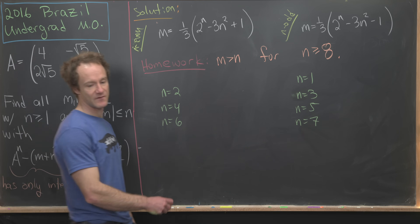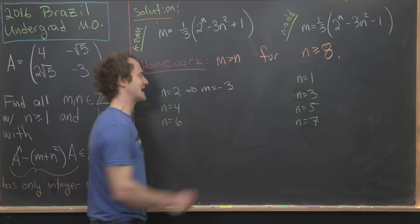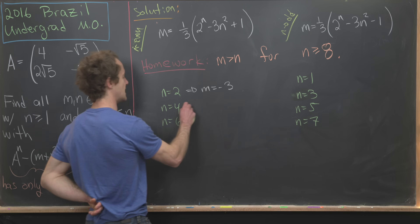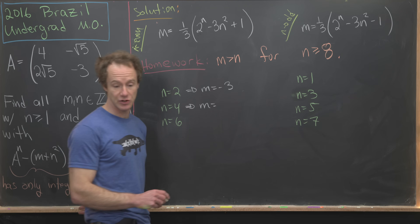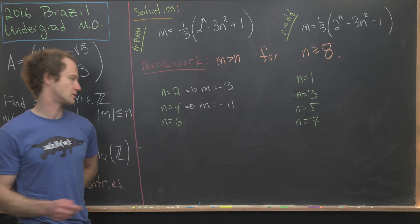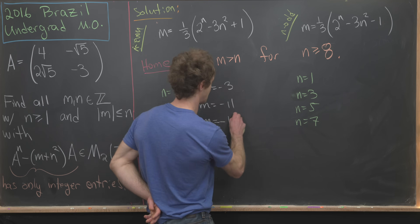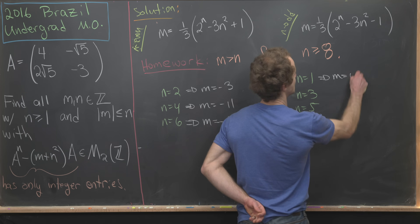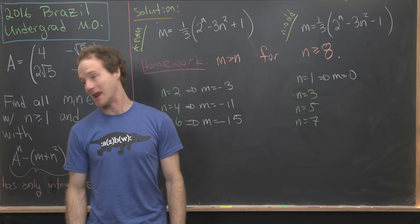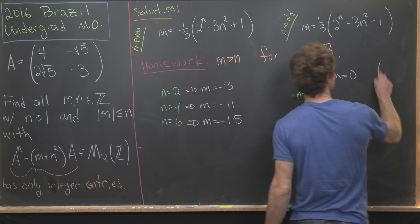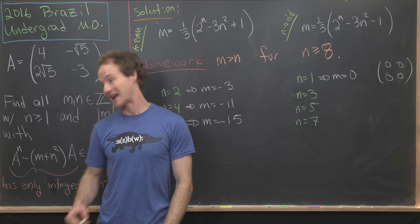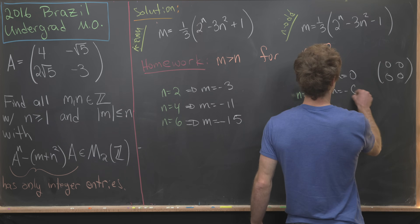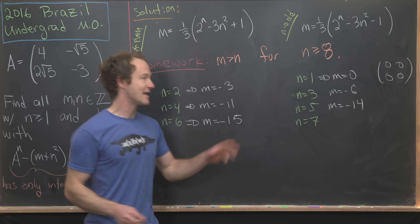Checking the even cases: n = 2 gives m = −3 (fails |m| ≤ n); n = 4 gives m = −11 (fails); n = 6 gives m = −15 (fails). For n = 1 (odd): m = 0, and plugging into the matrix expression gives the zero matrix, which has integer entries — so (n=1, m=0) is a solution.